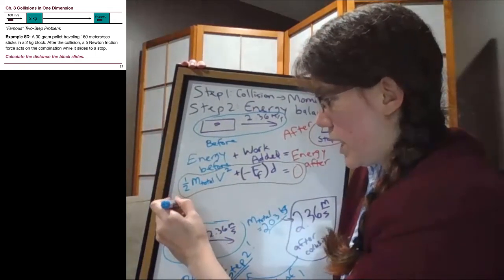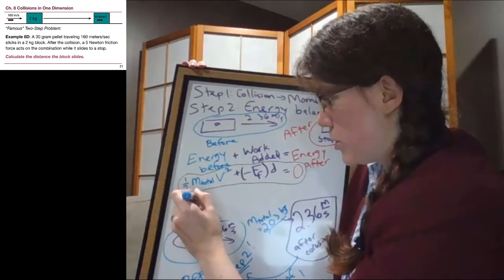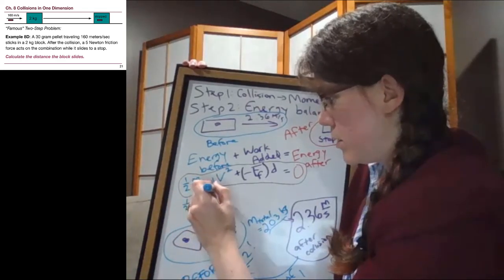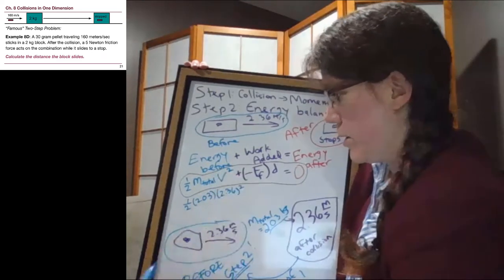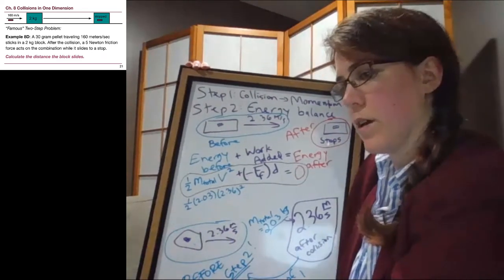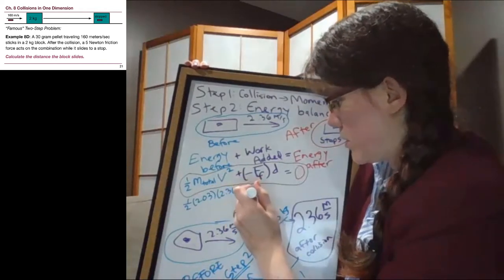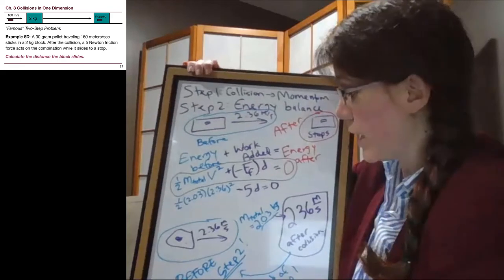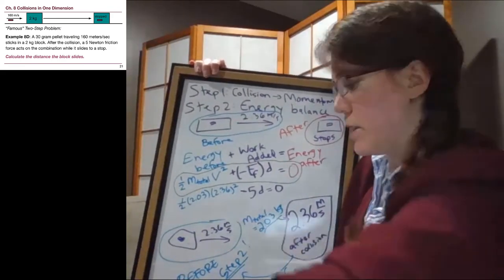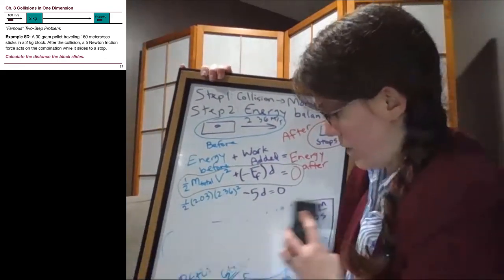Where we have one half times 2.03 times 2.36 squared minus five d equals zero. So we can add five d to both sides, and now we can see that I'm going to have to erase the rest of what was left here.